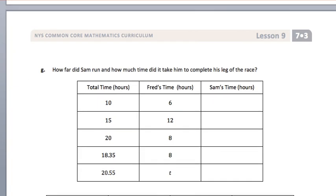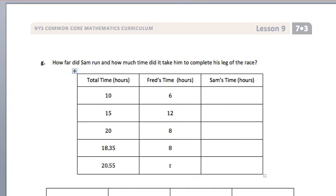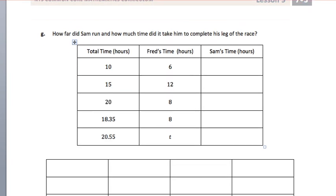Then in G, they asked us how far did Sam run and how much time did it take him to complete his leg of the race? We're doing that in parts. So if the total time is 10 hours and Fred's time is 6, then Sam's time would be 4, which is 10 minus 6. And in 15 hours, if Fred's time is 12, Sam's time would be 3, which is 15 minus 12.